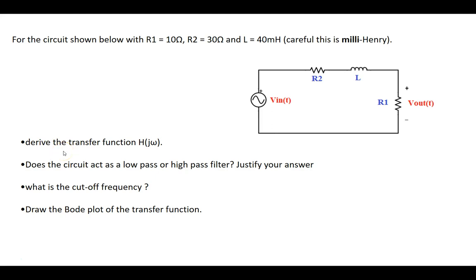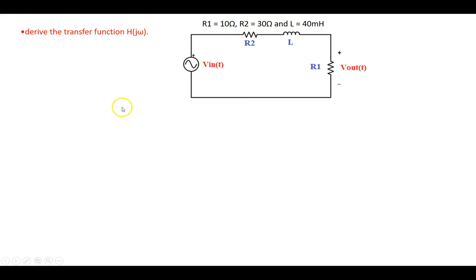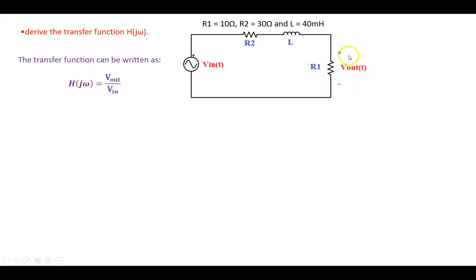Let's get started with deriving the transfer function. A transfer function by definition is written as the ratio of phasor voltage out divided by phasor voltage in, Vout over Vin. In this circuit, the resistor, inductor, and another resistor are all in series. The voltage across R1, which is Vout, can be found using the voltage divider formula. So Vout equals R1 divided by R1 plus R2 plus the impedance of L, which is j·omega·L, all times Vin.